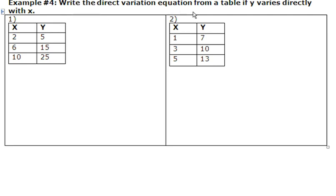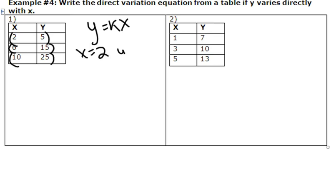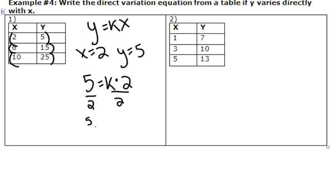Example 4: write the direct variation equation from a table if y varies directly with x. I have to figure out what my k value is. Since I know it varies directly, I can use any of the table values and plug them in for x and y. I could use (2, 5), (6, 15), or (10, 25) — it doesn't matter. I'm going to use x equals 2, y equals 5. My y is 5, my x is 2. I divide by 2, and I get k equals 5 halves. So my direct variation equation is y equals 5 halves times x.